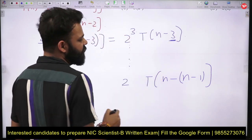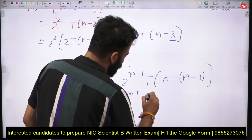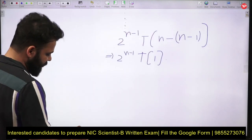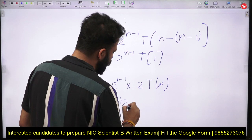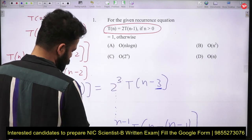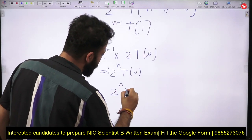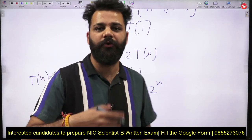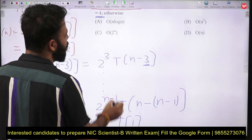So after n-1 substitutions we have 2^(n-1) · T(1). One more substitution gives 2^(n-1) · 2T(0) = 2^n · T(0). Since T(0) = 1, this simplifies to 2^n. Therefore the time complexity is O(2^n), which is option C.